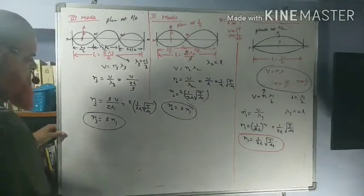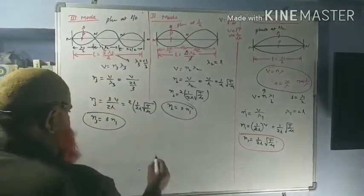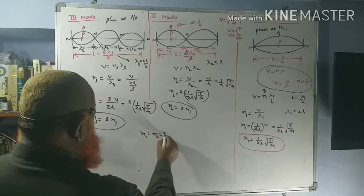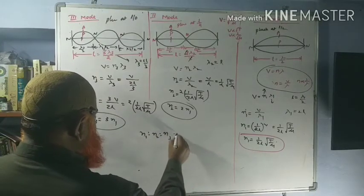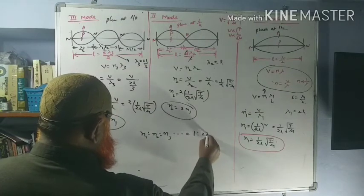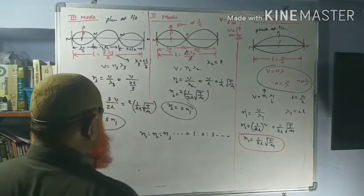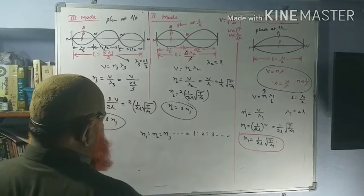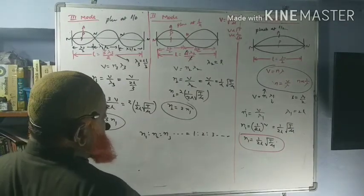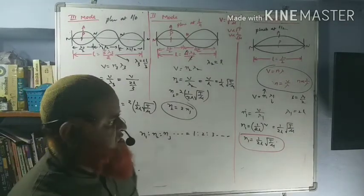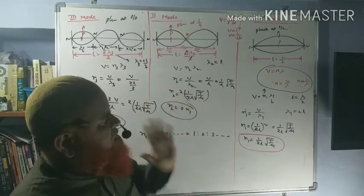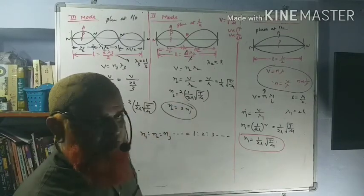So from this, you understand the ratio: N1 : N2 : N3 equals 1 : 2 : 3, and so on. This is the concept of modes of vibration in a stretched string. This is a very important concept. Thank you very much.